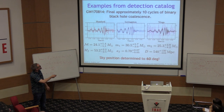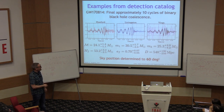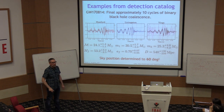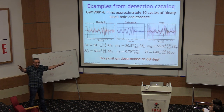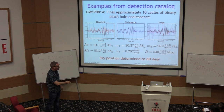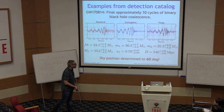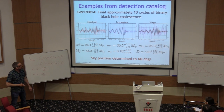For GW170814, the sky position improved by an order of magnitude. When Virgo joined as a third detector — not parallel to the LIGO detectors — it immediately broke many parameter degeneracies. Virgo actually saw nothing for GW170817, meaning the source was in one of Virgo's nulls, which itself sharply constrained the sky position when combined with the two LIGO detectors.